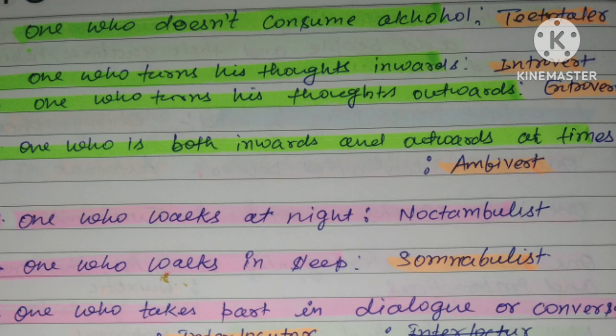After ambivert, we have a new word: noctambulist. The root 'noct' means night. The root 'ambuList' we saw in the previous video with 'funambulist' — a person who walks on a rope. So 'ambulist' means one who walks. Combined with 'noct' (night), a noctambulist is a person who walks at night, or one who has the condition of walking at night.